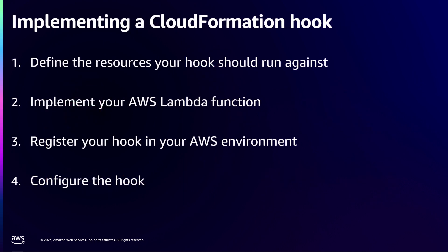To build a CloudFormation hook, there are roughly four steps. First, identify the resource types your hook should run against — in our case, anything with an IAM policy. Second, implement your AWS Lambda function, which is the core work and will call Validate Policy. Third, register the hook so it becomes available in your account. Fourth, configure it, which actually turns the hook on. If you operate in an AWS organization with many accounts, you can use CloudFormation StackSets to deploy, register, and configure the hook across your entire organization.